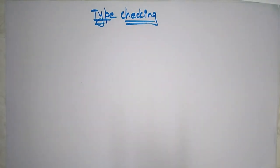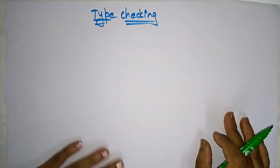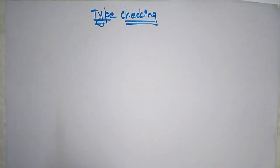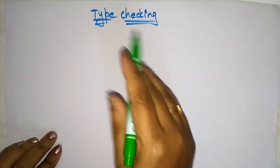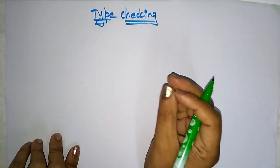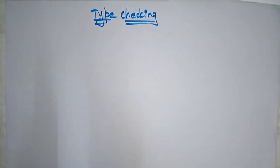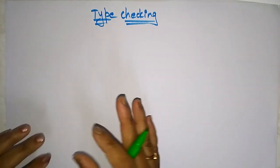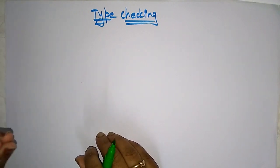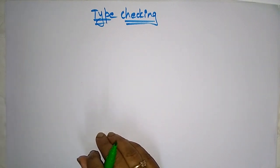Welcome back. Let's continue with compiler design and look at the topic of type checking. A compiler must check that the program follows the type rules of the language. While compiling the program, it has to follow these type rules. Each language has its own type rules, and the compiler checks based on those rules.